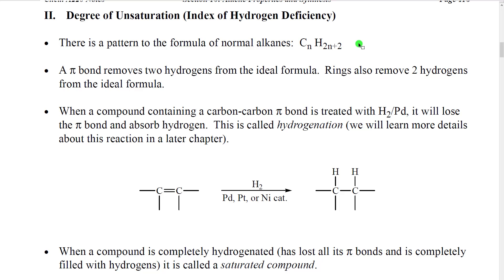So this number of hydrogens or this formula is often called the ideal formula of a molecule just because it represents a molecule that is extremely simple, has no double bonds, no rings, no heteroatoms, nothing. It's just a regular alkane.